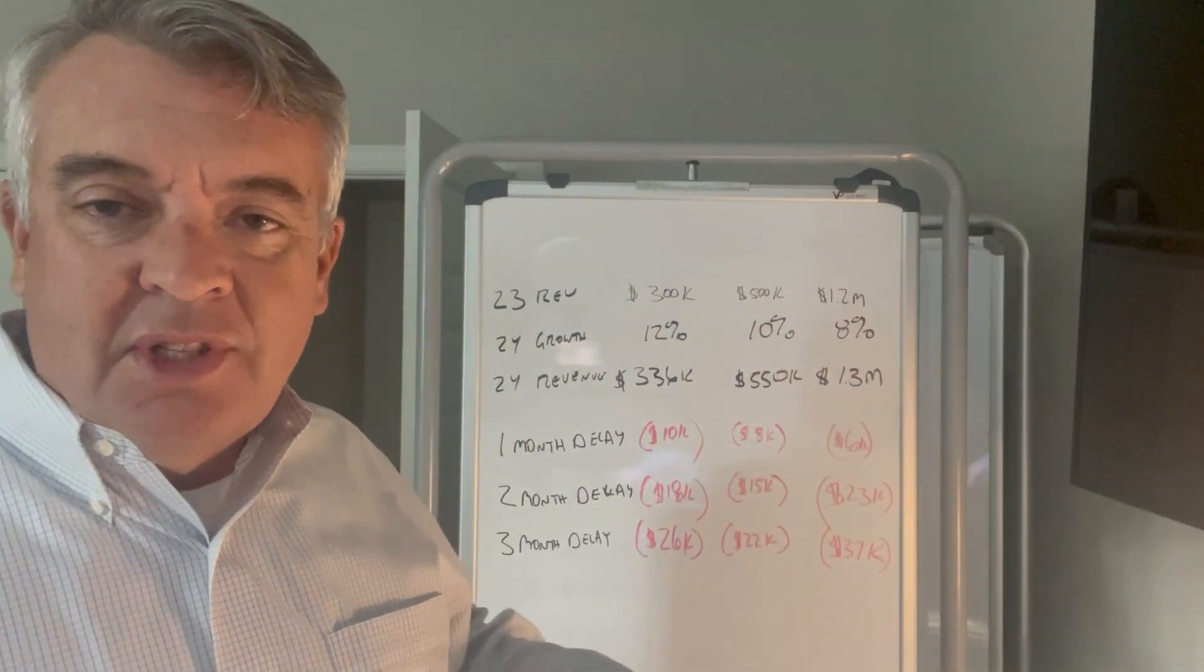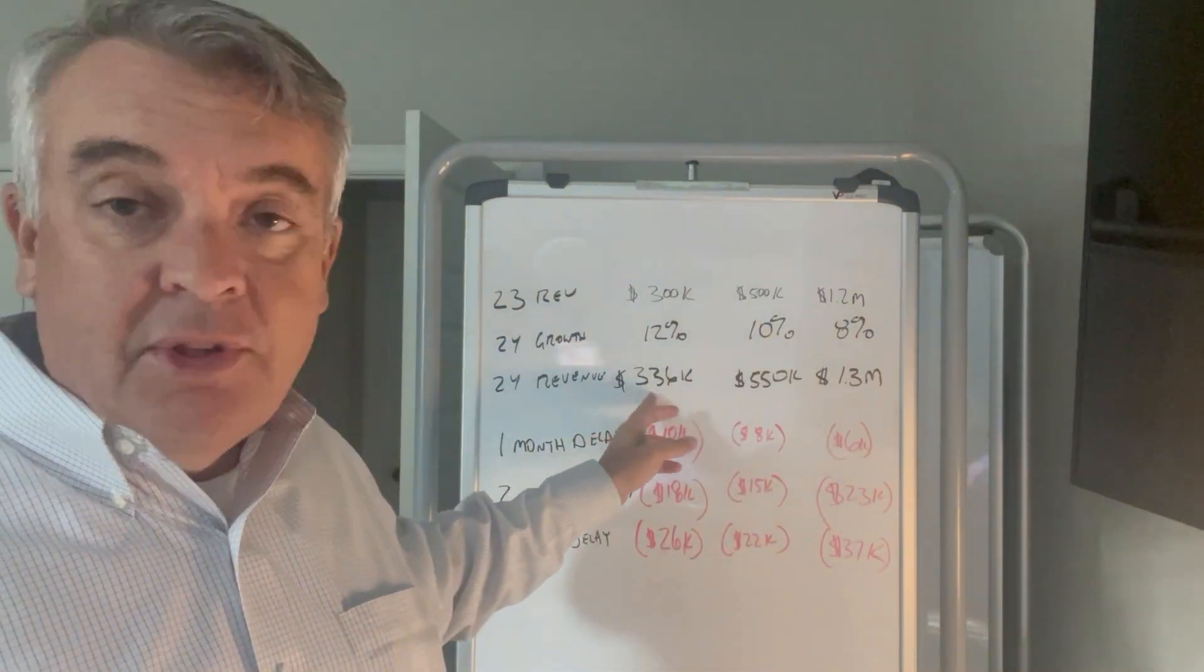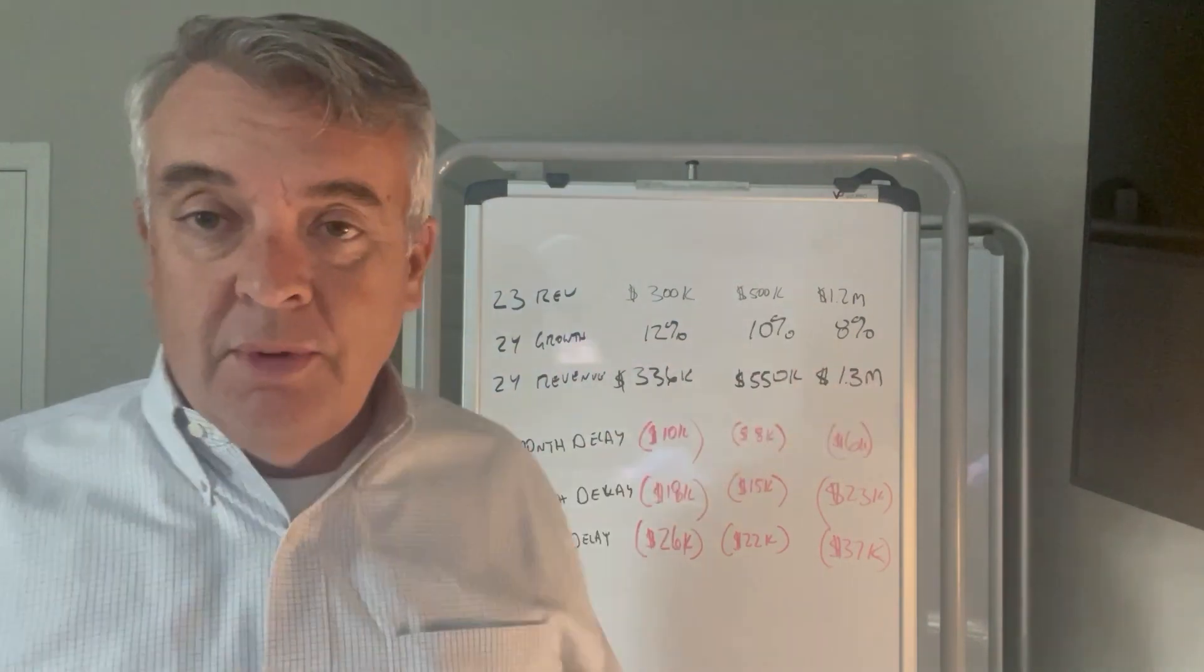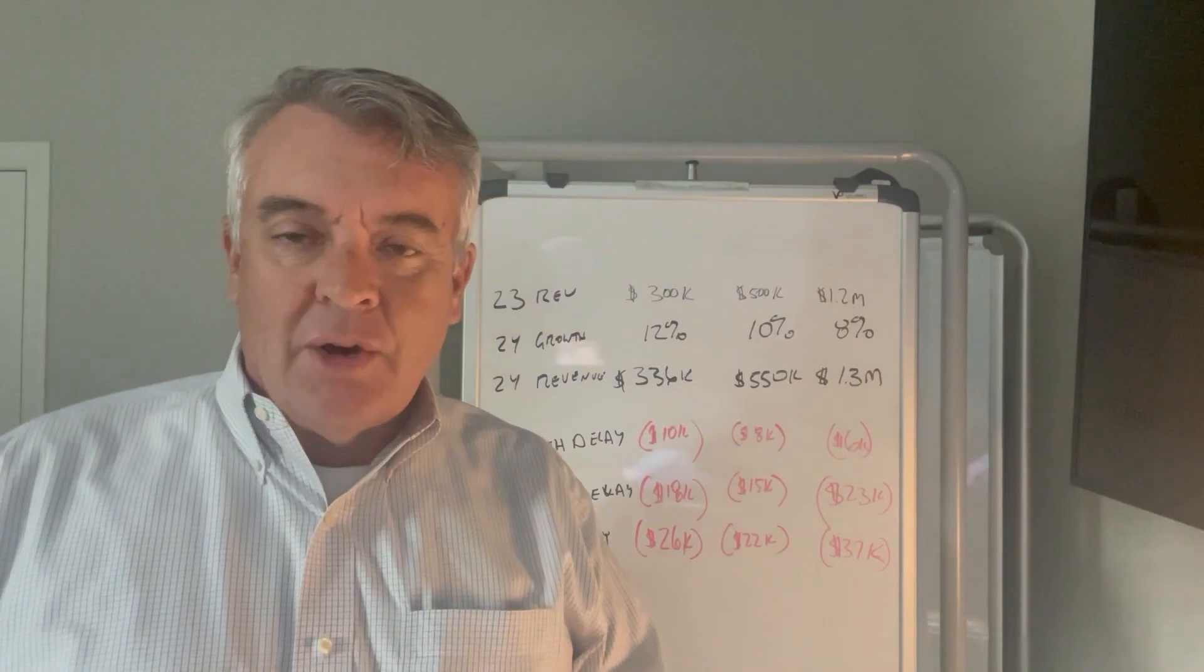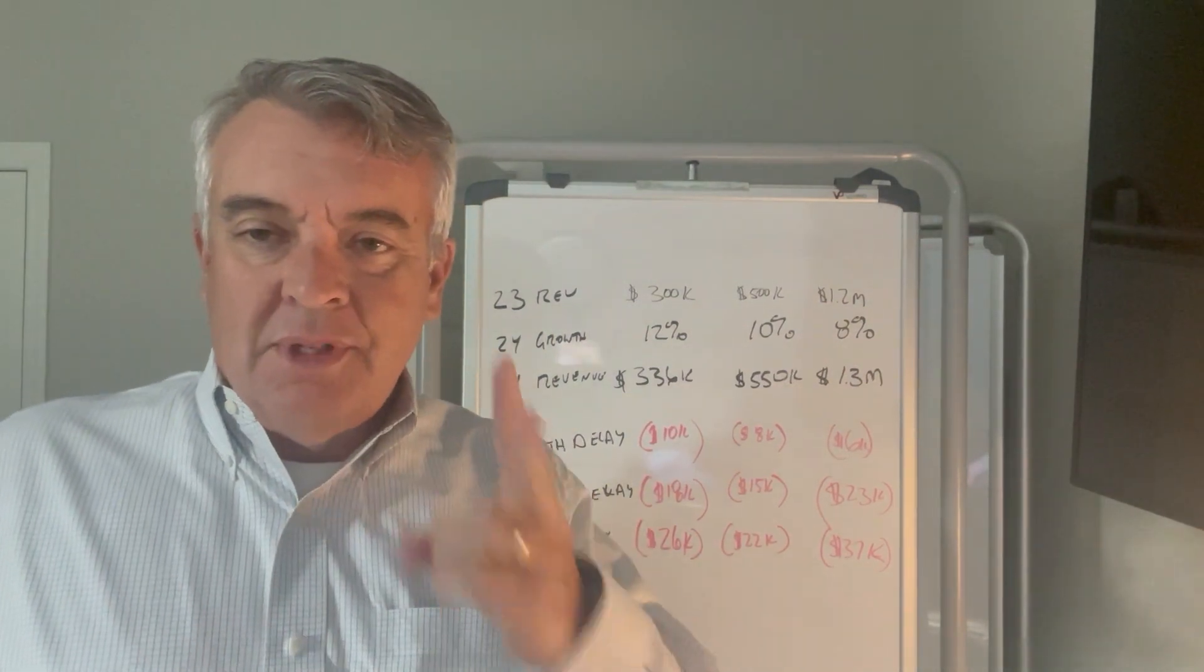So what that means, those businesses at the end of 2024 are either going to be $336,000, $550,000, or $1.3 million. There's a little bit of rounding in there. And I said, okay, what if we delayed our improvements by one month, two months, and three months?